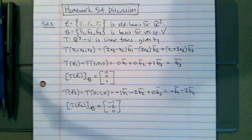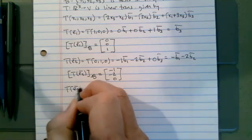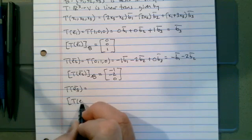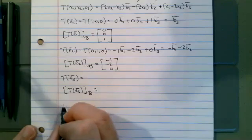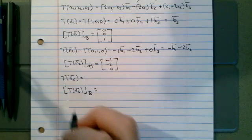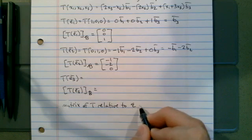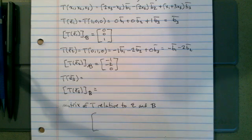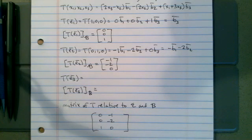We can do the same thing for T(E3) — find T(E3) by computing, then find the coordinates of T(E3) relative to basis B — and then we can get the matrix. The matrix of T relative to the bases E and B: the first column will be 0, 0, 1 (the coordinates of the image of E1), the second column will be negative 1, negative 2, 0, and then we didn't find the third column. But that's how we find the matrix of T relative to E and B.